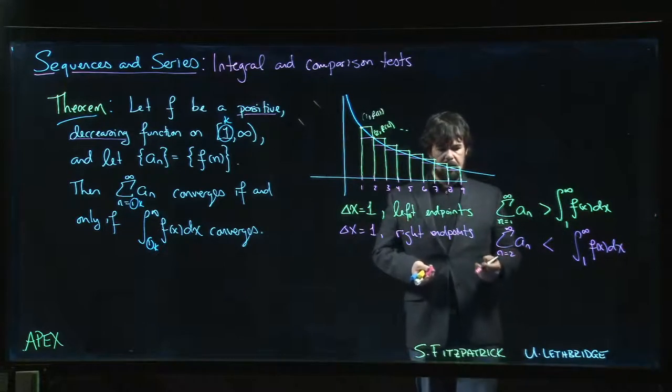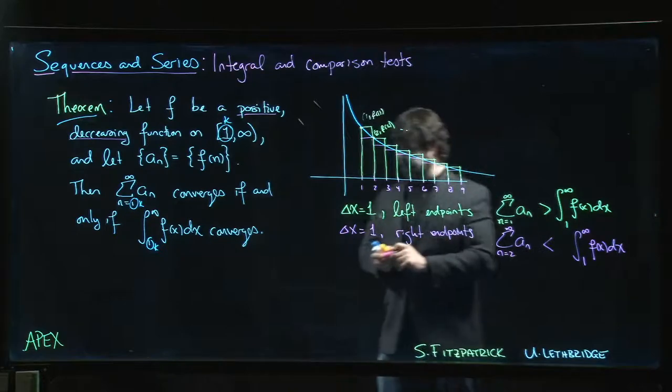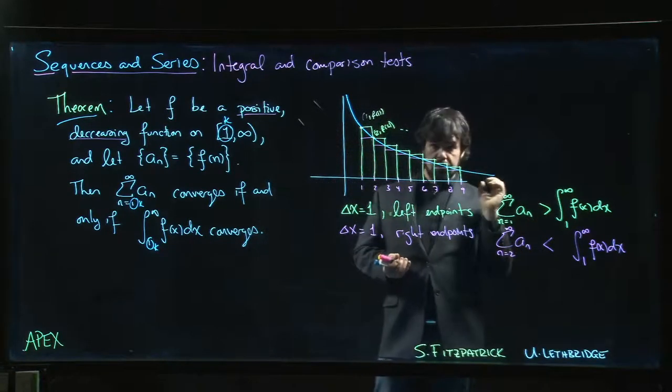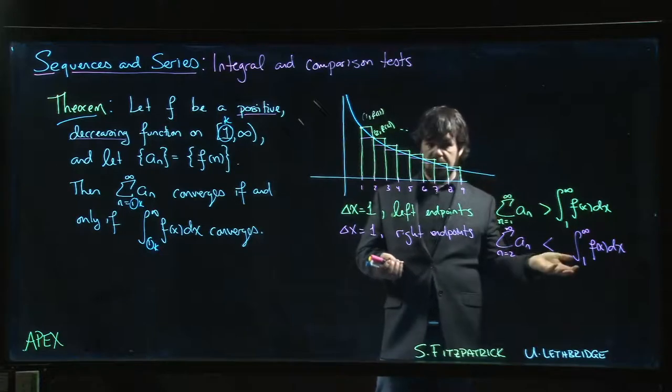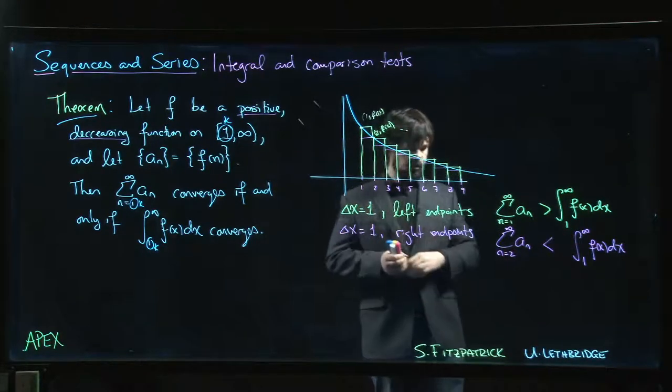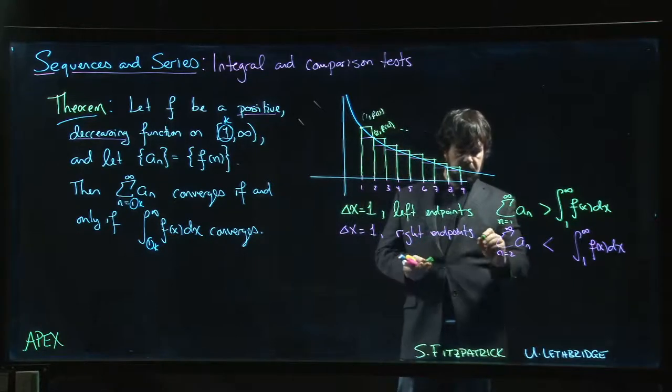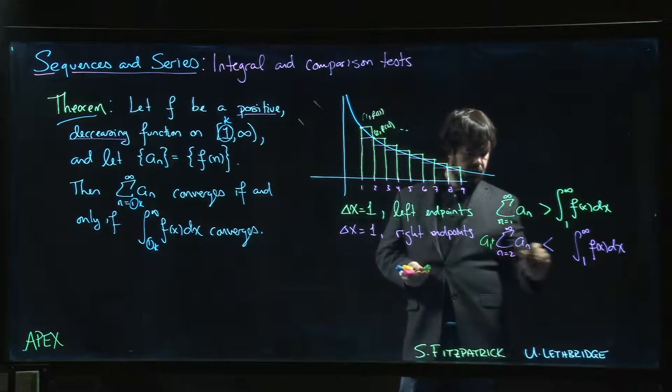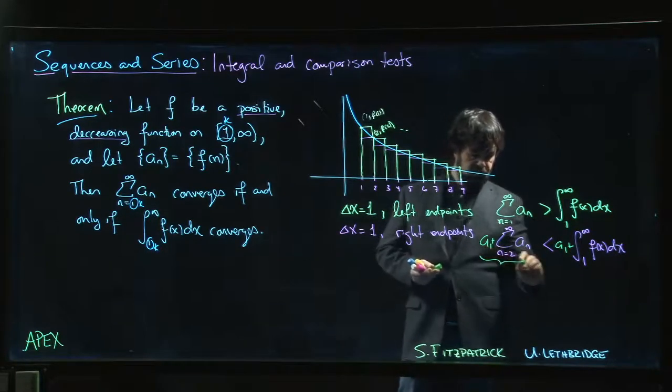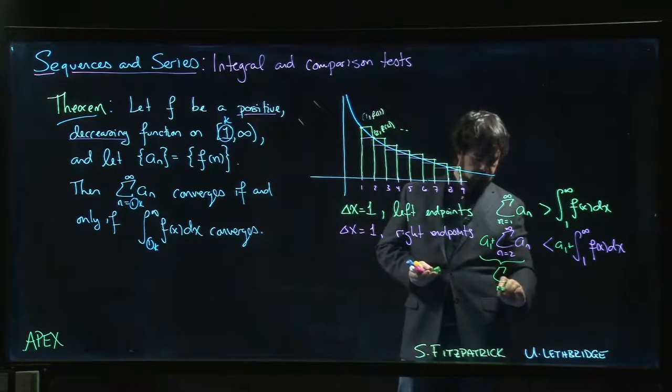Now that's not quite our series, but if the sum starting at two converges, well then certainly the entire sum converges because we can always just add. We can just do this. We can say, okay, that's fine, just add a_1 to both sides. Now you have the series. This is n equals one to infinity of a_n.